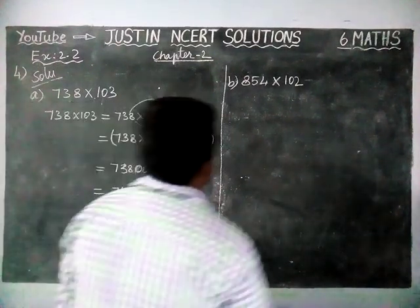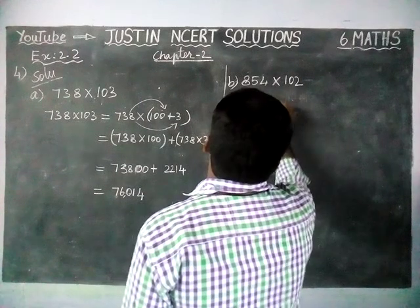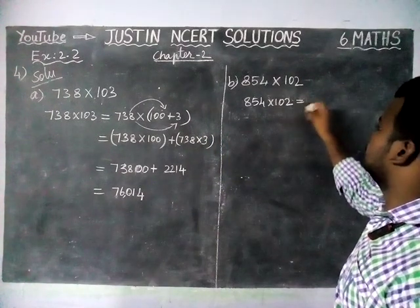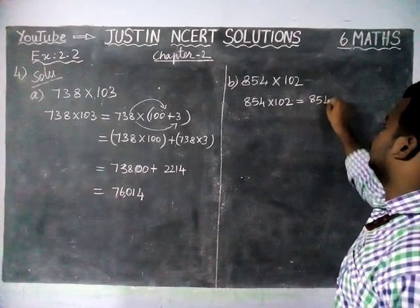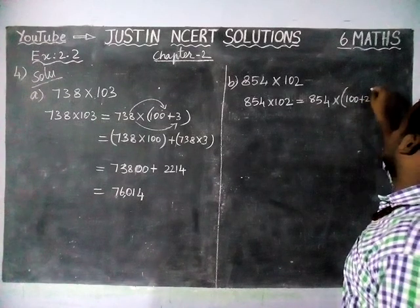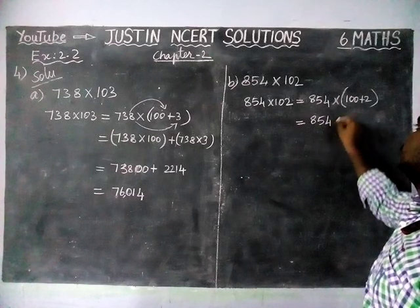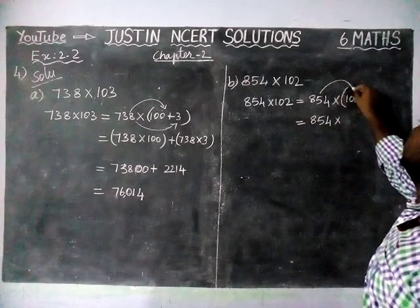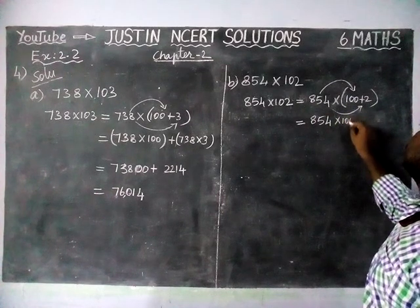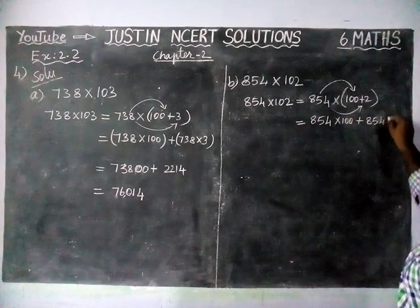Next question, option (b) — the same concept we are going to apply. 854 into 102 is equal to — we are going to separate 102 as 854 into (100 plus 2). This equals 854 into 100, plus 854 into 2.